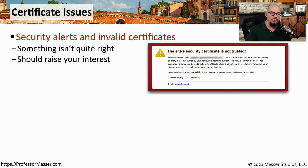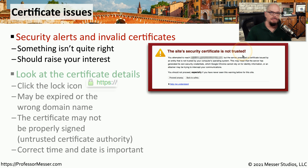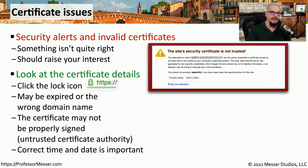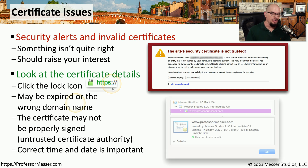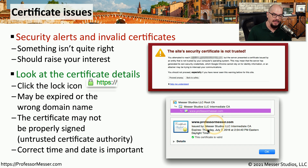Another important error to watch for is certificate errors when connecting to a third-party device. You might see a message saying the site's security certificate is not trusted. Most browsers allow you to view certificate information by clicking the lock icon. Check that the certificate has a correct domain name, hasn't expired, is properly signed, and shows as valid. If any of these values are incorrect, your browser won't validate it and will display error messages. This could be a server misconfiguration or it could indicate a third party is trying to perform an on-path attack.